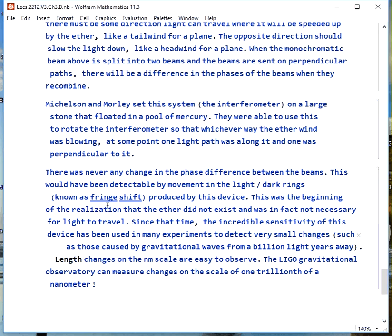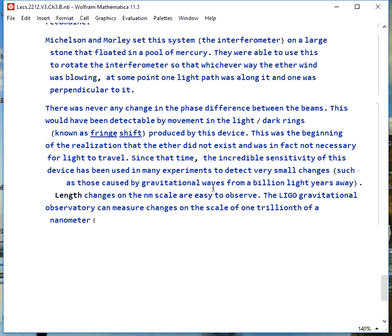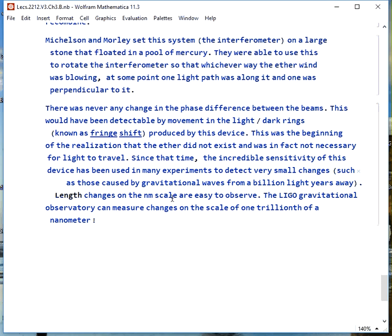They never did see any changes. This would have been detected by movement in the rings produced by this thing that's called fringe shift and this is when people began to figure out that there is no ether and we don't really need that for light. It's just oscillations of electric and magnetic fields and it's self-sustaining.